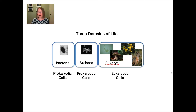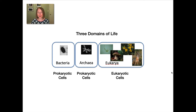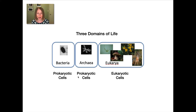So which organisms on the planet are prokaryotic versus eukaryotic? All of life can be separated into three so-called domains: bacteria, archaea, and eukarya. Bacteria and archaea all have single-celled organisms, and they are all prokaryotic. The domain eukarya consists of both single-celled organisms as well as multicellular organisms, and they all have eukaryotic cells.